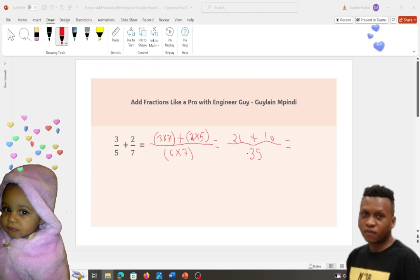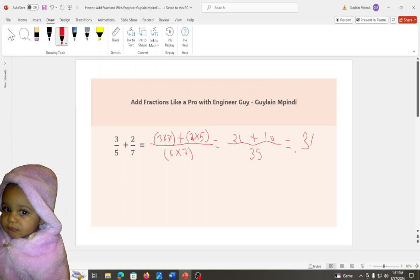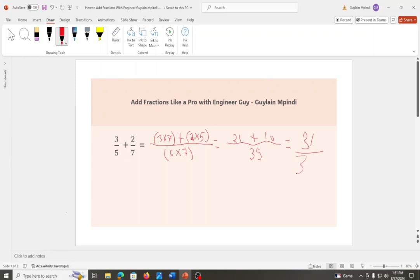So 21 plus 10 equals 31. And this 35 will write right here.